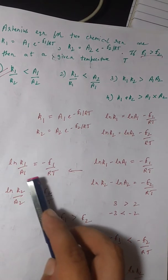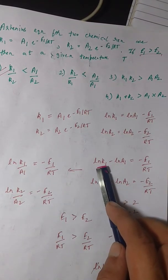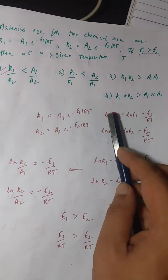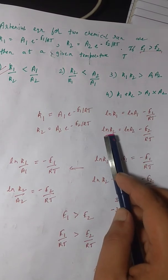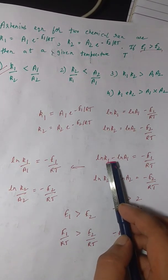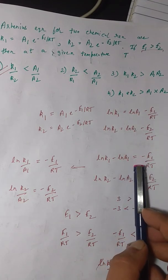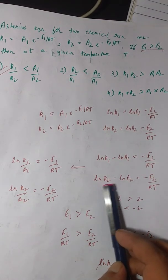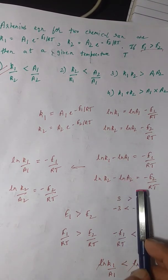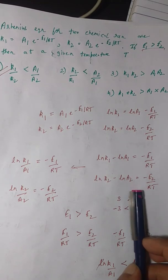Now what we do is we can take A1 on this side and similarly A2 on this side, and we can write this as ln k1 - ln A1 = -E1/RT and ln k2 - ln A2 = -E2/RT.